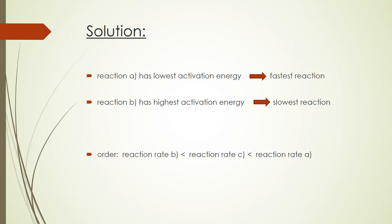As we can see, reaction A has the lowest activation energy, which makes it the fastest reaction. Reaction B has the highest activation energy, so this is the slowest. The correct order from slowest to fastest is B, then C, then A.